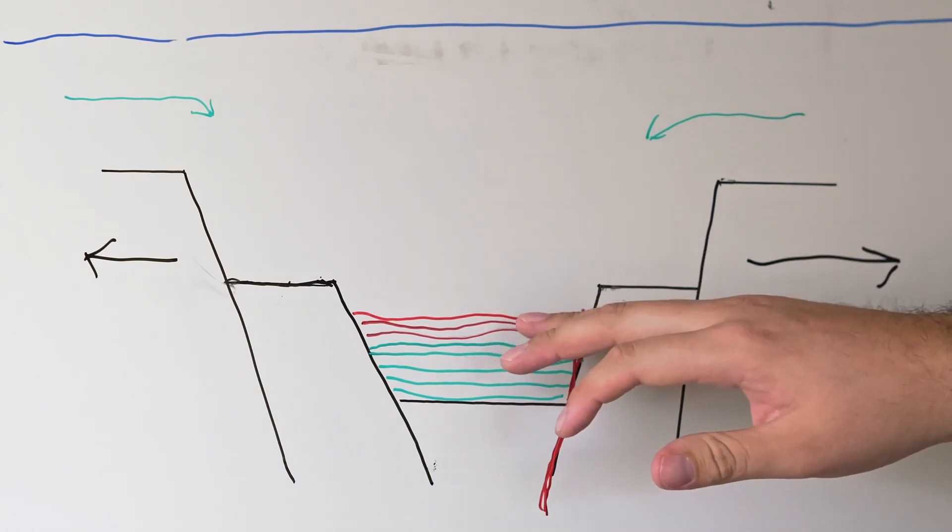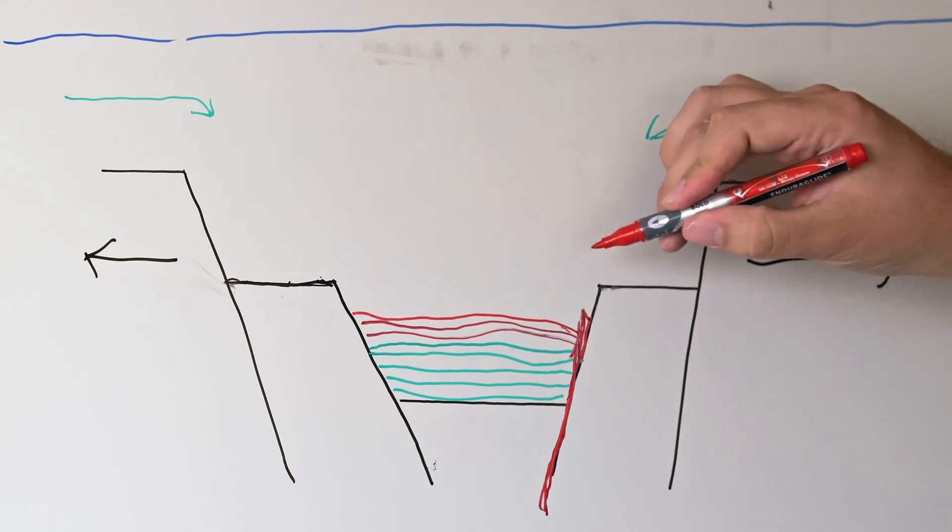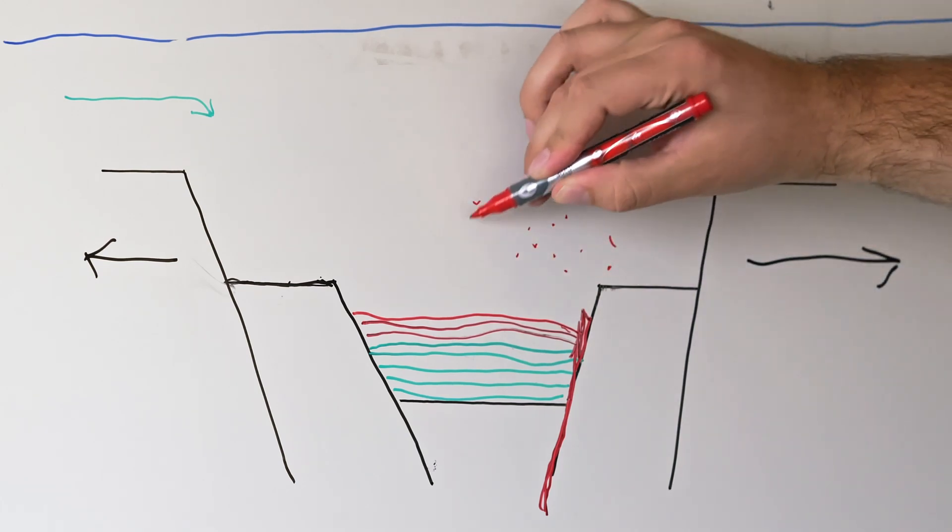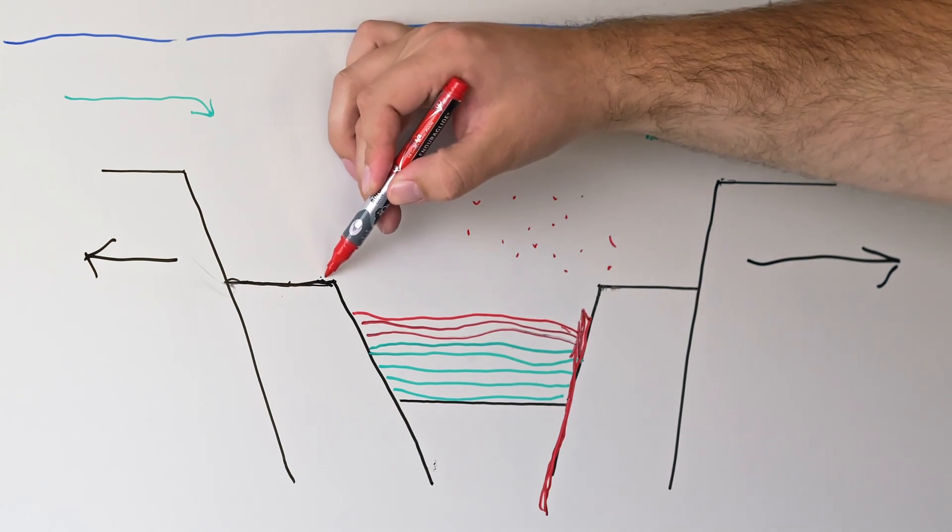While we get stratiform lead and zinc mineralization proximal to the vent itself, we're also getting large plumes of lead and zinc throughout the basin that are thin as we move away from the vent complex.